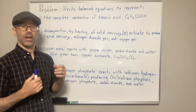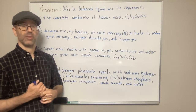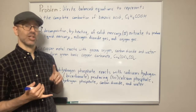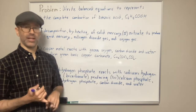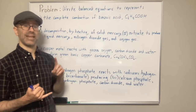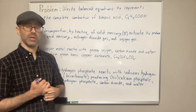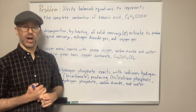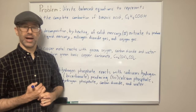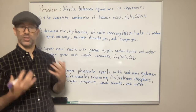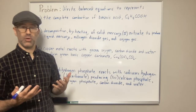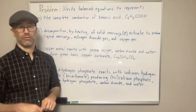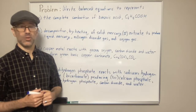Whenever you're given some sort of hydrocarbon — something that has carbons, hydrogens, and oxygens — and they say it's a complete combustion, the only two products forming are carbon dioxide and water. Once we have that out of the way, we can write our skeletal structure for the equation.